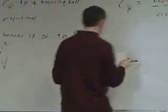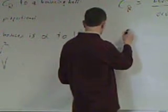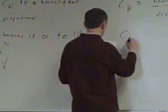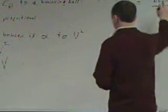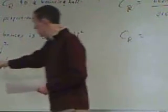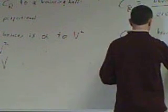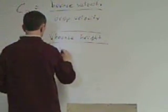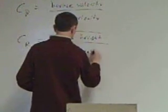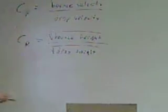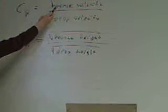But when I divide them, those constants, whatever they might be, cancel out. So I'm going to go back to equals. So C sub R equals, so I have bounce velocity, and I'm going to substitute in the square root of the height. That's proportional to velocity. So I can do that. So I'm going to have bounce height square root over drop height square root. Because that guy is proportional to that velocity. And this one is proportional to that velocity.